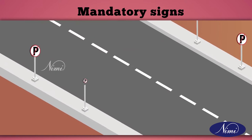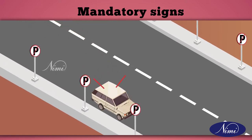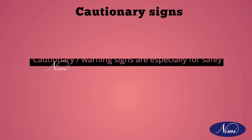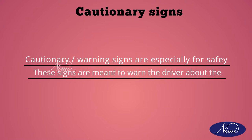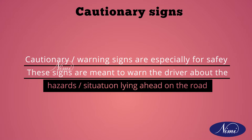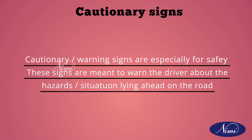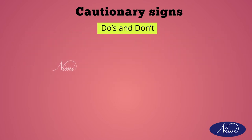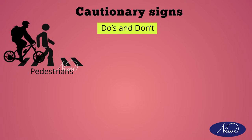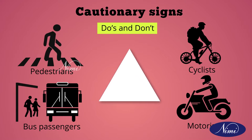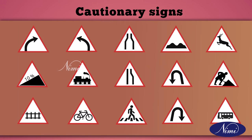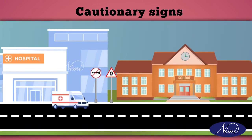For example, in a no parking area if we park our vehicles it is a finable action. Next are cautionary signs. Cautionary or warning signs are especially for safety. These signs warn the driver about hazards or situations lying ahead on the road. They indicate do's and don'ts for pedestrians, cyclists, bus passengers and motorists. Cautionary signs are triangular in shape with red borders. Examples include no horn boards near hospitals and school zone areas.